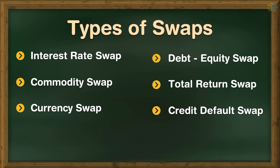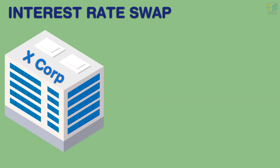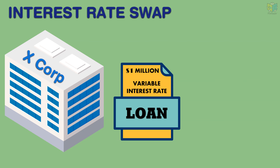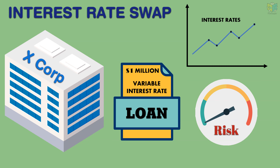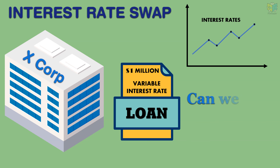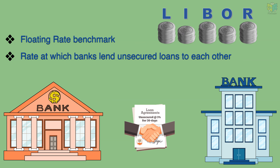Let us understand these swaps in detail. Interest Rate Swap: Suppose X Corp has a bank loan of $1 million on which it pays a floating rate of interest. As the floating rate keeps fluctuating, today it could be 4%, and a year later it could be higher or lower. If the interest rate increases, the company would have to pay a higher interest. X Corp wants to hedge this risk and wants to convert this uncertain liability into a predictable one.